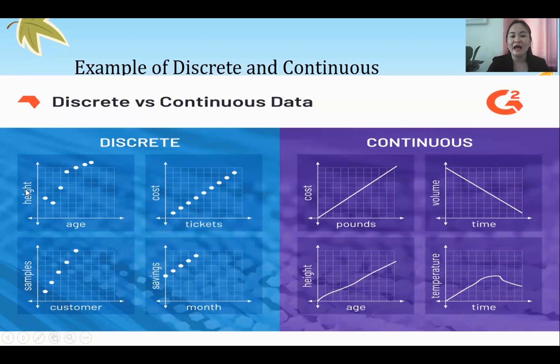For discrete, we have the height, the cost, the volume, the temperature, that's continuous.